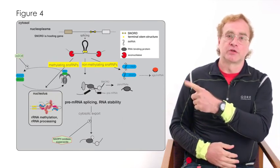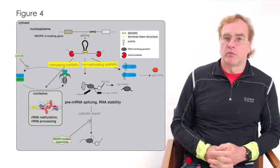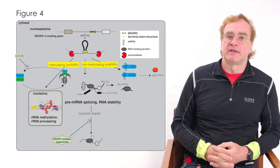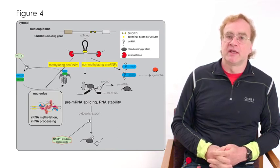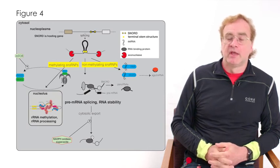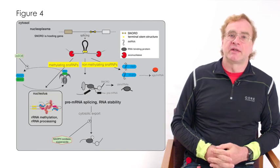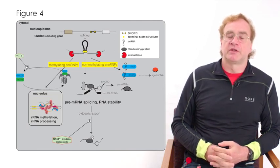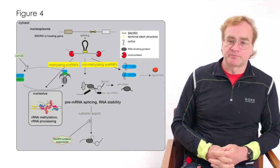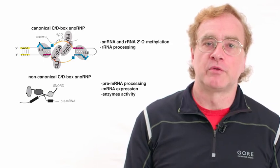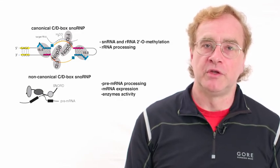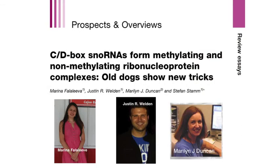However, there's a second function of SNORD115, and this second function is to associate with hnRNPs and other RNA-binding proteins and then interact with messenger RNAs or pre-messenger RNAs in the cell, and this changes splicing and possibly also RNA stability as some SNORD115 are even exported into the cytosol. The ratio between these two functions is likely controlled by the cell, as the machinery that packages SNORD115 into a methylating complex is controlled by signaling pathways such as the mTOR pathway. So this model explains that SNORD115 contribute to gene regulation by regulating alternative splicing, a process that is used to make more economical use out of the genome. It also shows that, like old dogs, SNORD115 can learn new tricks.